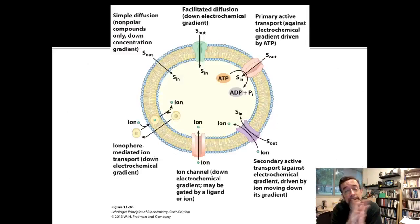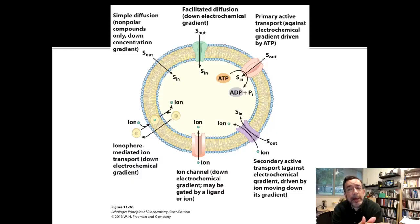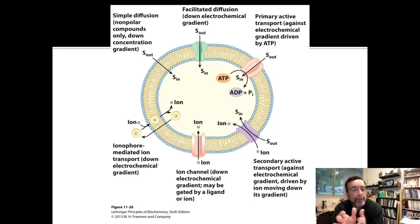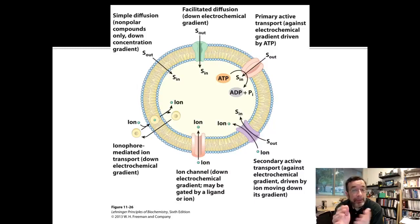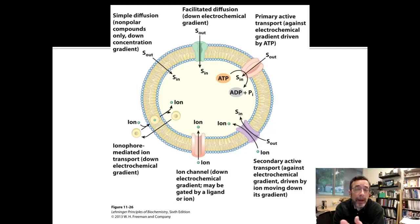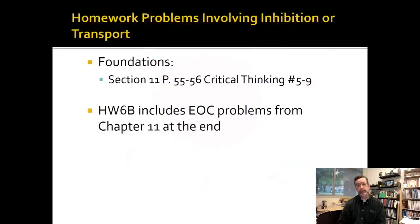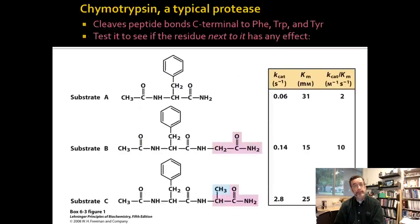This is a review slide of everything we've talked about: uncatalyzed diffusion in the upper left, then facilitated diffusion where a transporter catalyzes movement, then active transport where ATP is burned to move something in or out, and finally ionophores — small molecules that move ions across the membrane and disrupt all the hard work of the ATPase. If you can understand how all these things work and go through the homework, you'll have the understanding you need for test 3. Note that homework 6b will include some end-of-chapter problems from chapter 11.